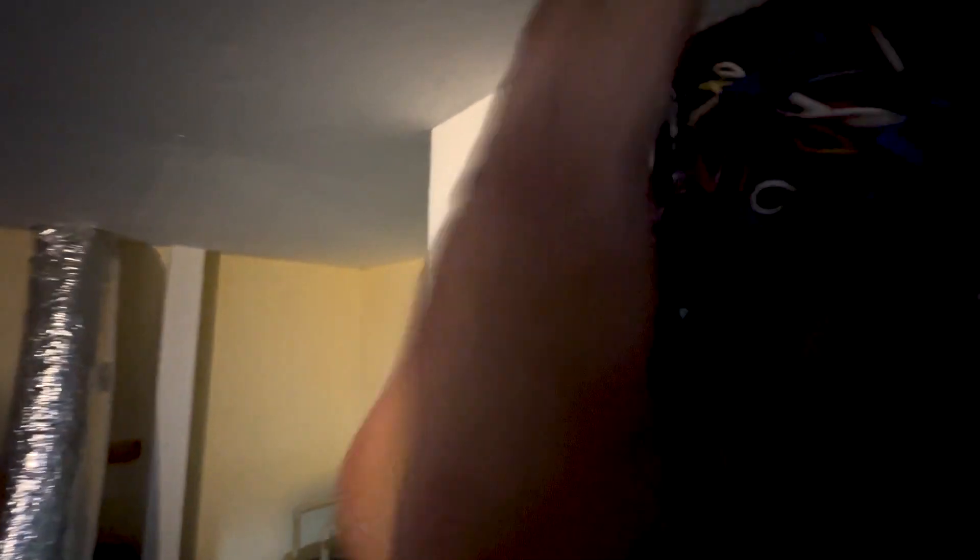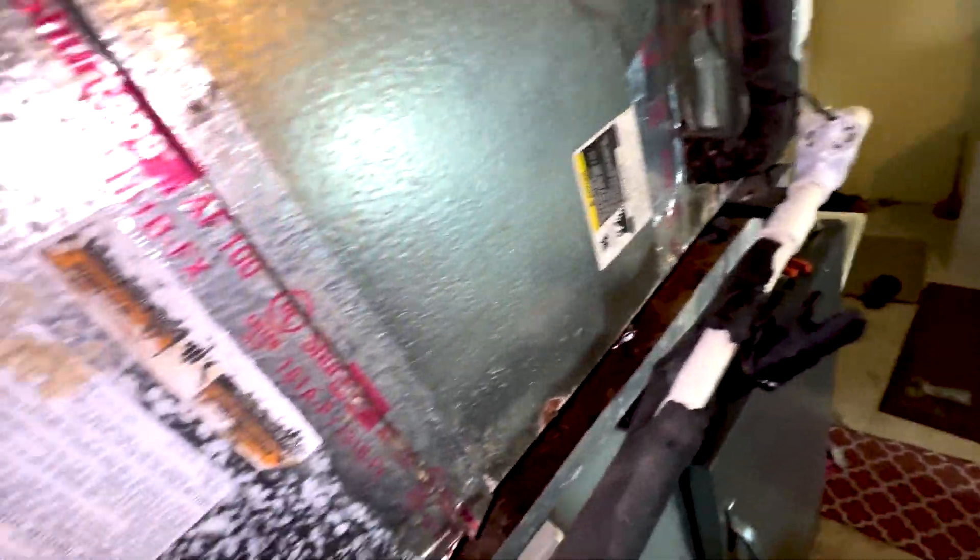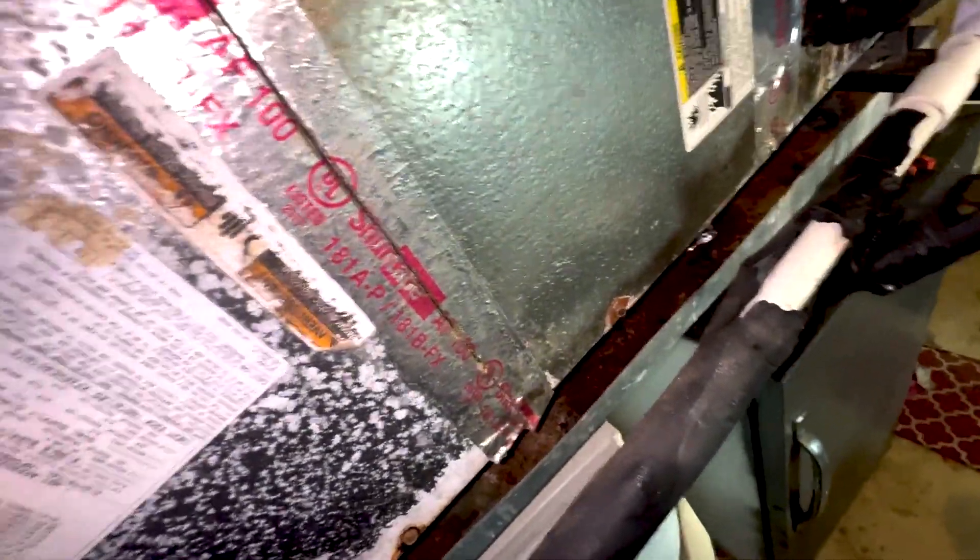All right, so here we go. Black to red and black to red. So we can push these back inside. And we can close the air handler back up. Now we have our wire here. Again, you can tie this thing up so it's out of the way. And let's turn it on.